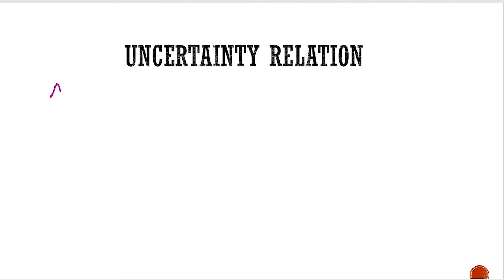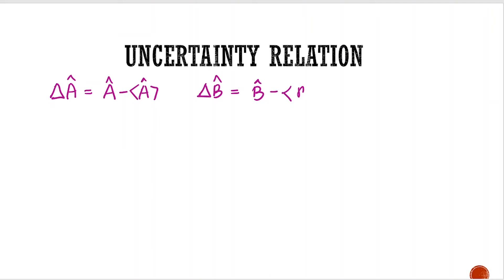In the last lecture, the uncertainty operator was introduced, which is ΔA, and the expectation value of A is defined similarly for ΔB. If you want to see how we derive this relation and how we get this uncertainty operator, you can watch the previous lecture video. So we are having these uncertainty operators.